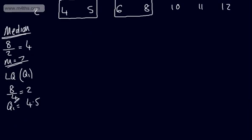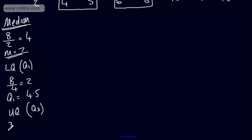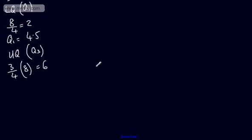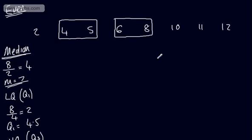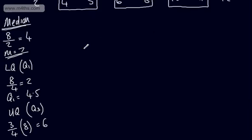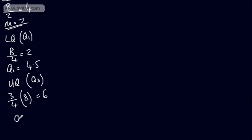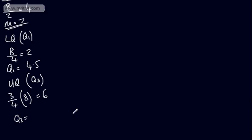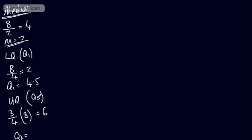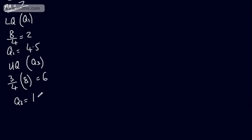Now consider the upper quartile, Q3, which is three quarters of the way into the data set. Three quarters of eight is 6. We locate the sixth value and then consider the median of the sixth and the seventh. The sixth is 10 and the seventh is 11, so we go halfway between. Q3, the upper quartile, is 10.5.